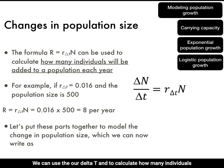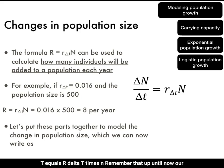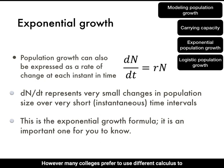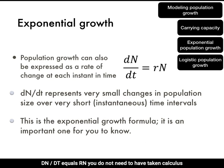We can use r_Δt times N to calculate how many individuals will be added to a population every year. Putting these parts together, we can write: ΔN divided by Δt equals r_Δt times N. Many ecologists prefer to use calculus to express population growth as a rate of change at each instant in time. We can convert this into the equation: dN divided by dt equals rN.